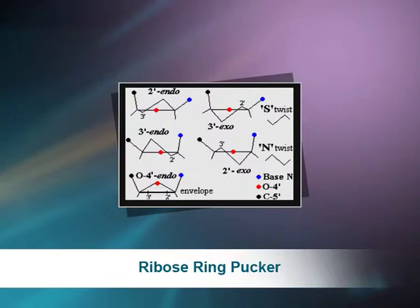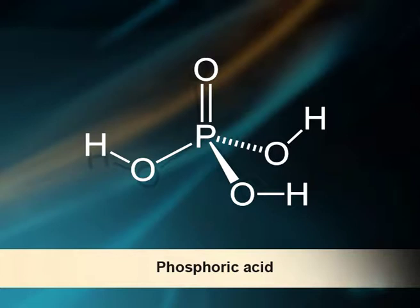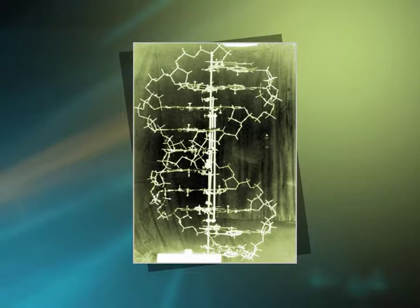The ribose ring is not planar and usually adopts C2'-endo (south) or C3'-endo (north) conformation. Ribose ring pucker arises because a flat pentagon puts all ring carbon atoms into eclipsed conformations. Endo pucker has major displacement on the beta phase where C2' or C3' are turned out toward O5', the same side as C5' and the base end. Exo pucker goes to the opposite side of the ring. The 2'-endo and 3'-endo show the lowest energy conformations. The Watson-Crick model of DNA adopts 2'-endo whereas RNA and the A-form of DNA adopt the 3'-endo twist.